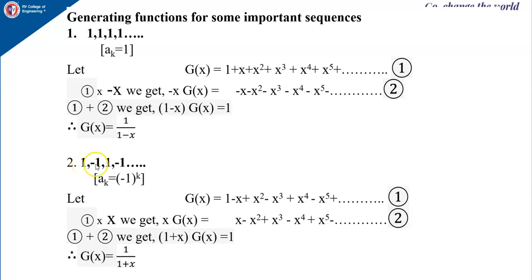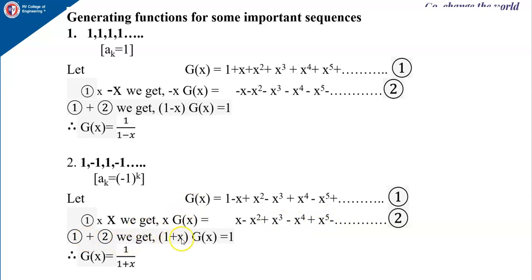If your sequence is alternating plus 1, minus 1, plus 1, minus 1, that is ak equals (−1)^k, then g(x) equals 1 minus x plus x² minus x³ plus x⁴ and so on — call this equation 1. Multiplying g(x) by x gives equation 2. Adding equations 1 and 2, we get (1 plus x)·g(x) equals 1. Therefore, g(x) equals 1 divided by (1 plus x).